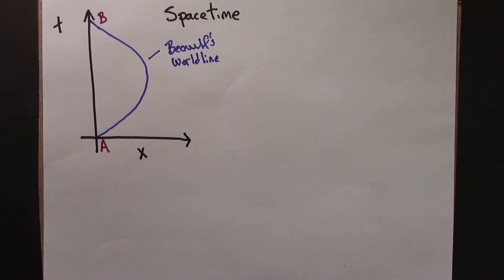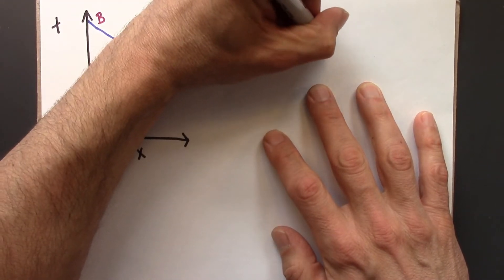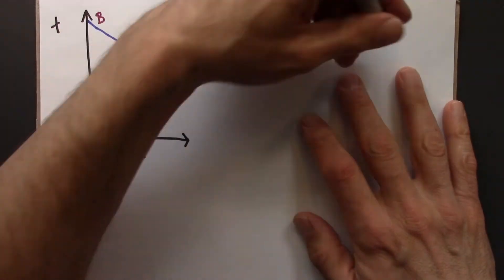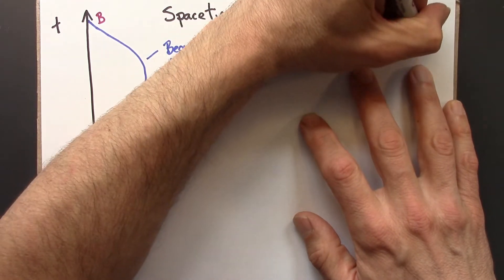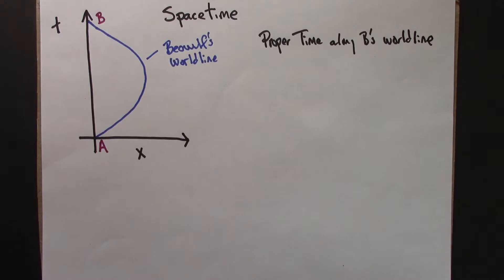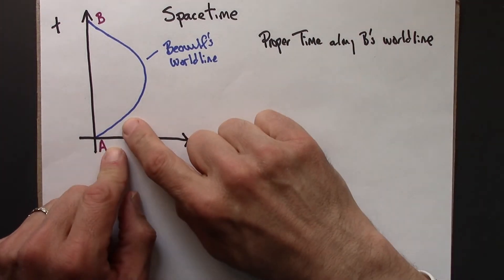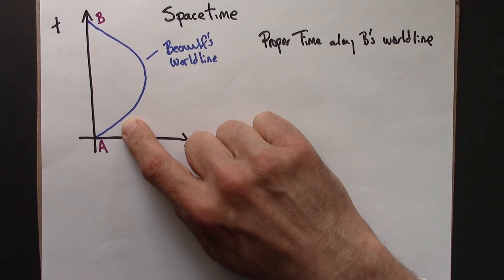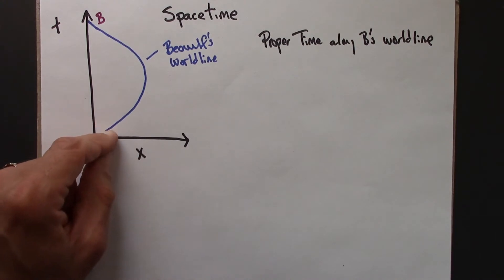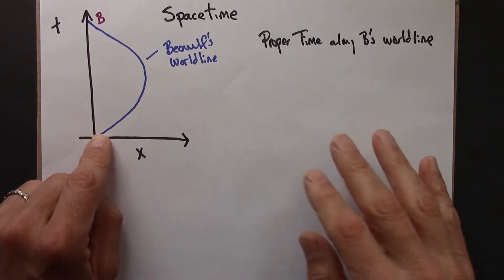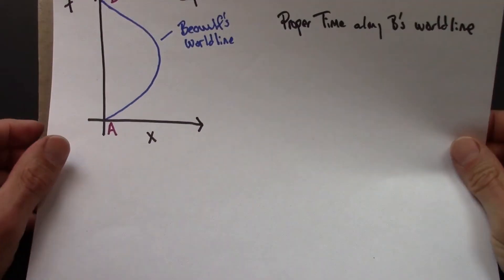We don't have a formula for proper time, per se, but we do have a formula for the spacetime interval, and that's the metric equation. The metric equation, or the spacetime interval, applies to inertial clocks. And Beowulf's clock is definitely not inertial. His velocity is changing. However, if we look at just a tiny segment of Beowulf's journey, if we zoom in closer and closer and closer, that curve starts to look straight.